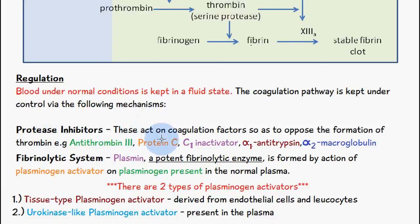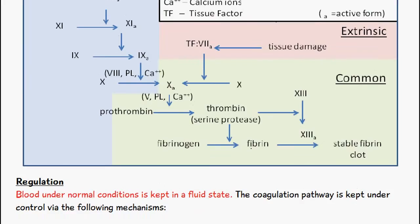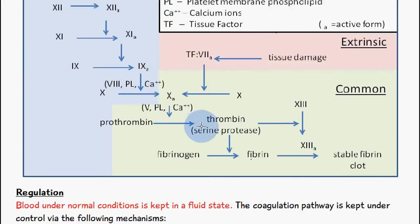Regarding protease inhibitors — these are enzymes which digest proteins and act on coagulation factors to oppose the formation of thrombin. The main protease inhibitors are: antithrombin 3, protein C, C1 inactivator, alpha-1 antitrypsin, and alpha-2 macroglobulin. These act on coagulation factors to prevent thrombin formation.